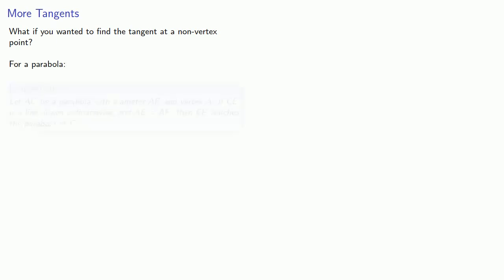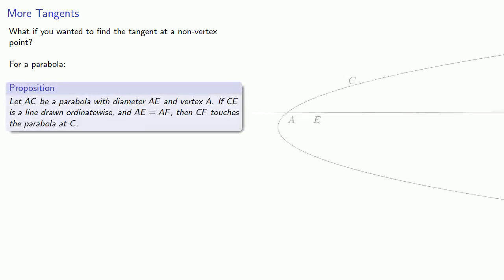Apollonius proves, let AC be a parabola with diameter AE and vertex A. If CE is a line drawn ordinate-wise, and AE equals AF, then CF touches the parabola at C.